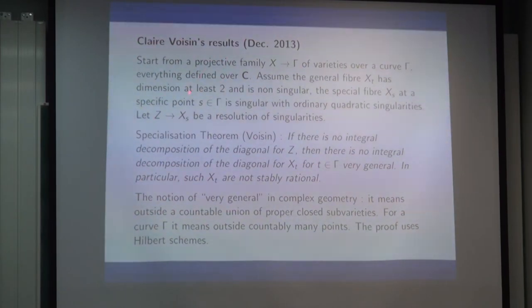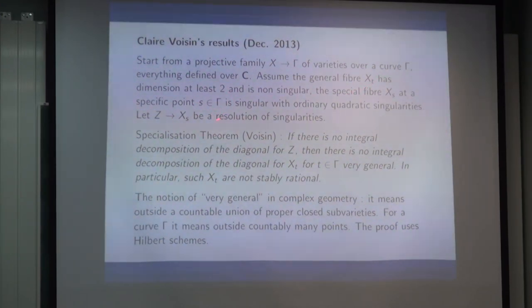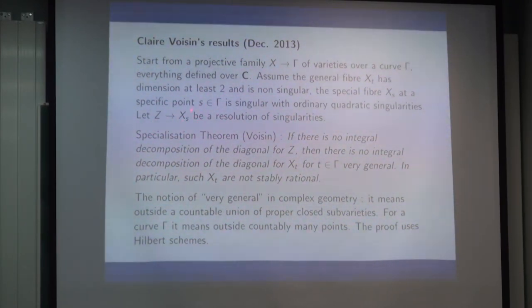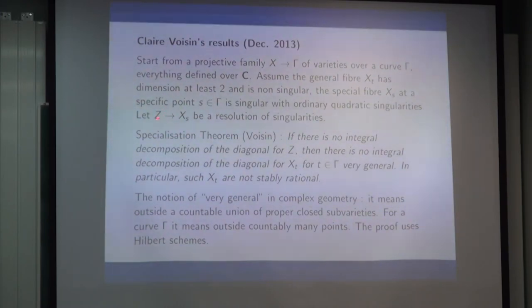What Claire Voisin did in December 2013 was the following great idea. You start with a projective family of varieties over a curve Γ — a one-parameter family of varieties over ℂ — and assume the general fiber has dimension at least 2, is non-singular. You assume the special fiber at some point s is singular but not too singular: it has ordinary quadratic singularities, which look locally like the cone over a quadric. You call Z → X the resolution of singularities: you blow up each singular point and on top get a smooth quadric. Then the specialization theorem is: if there is no integral decomposition of the diagonal for Z, then there is no integral decomposition of the diagonal for X_t, for t in Γ very general — and in particular X_t is not stably rational.